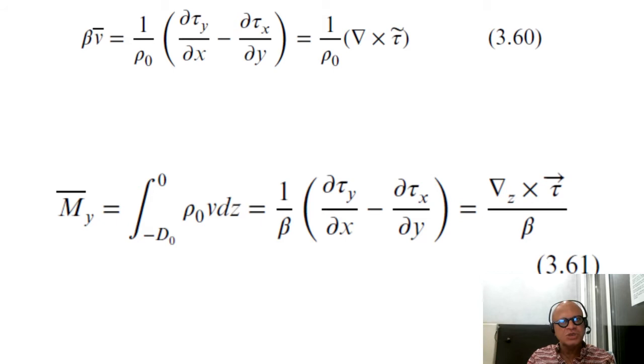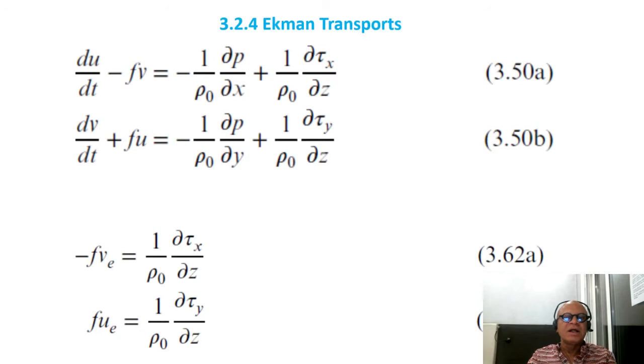So, subtropical gyre, which is clockwise, is met with the subpolar gyre, which is counterclockwise. Beautiful, elegant solutions come out of this, even though it doesn't match the western boundary currents exactly.